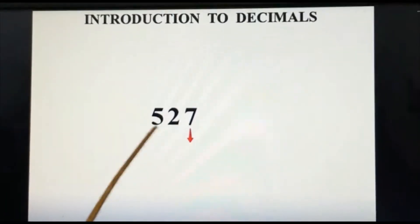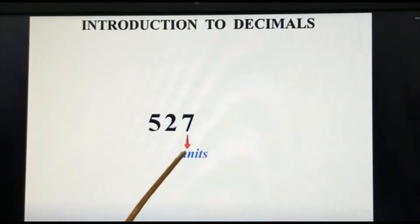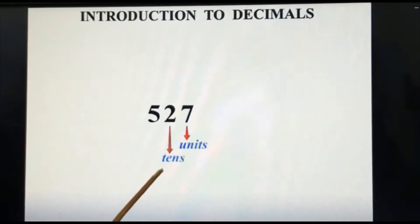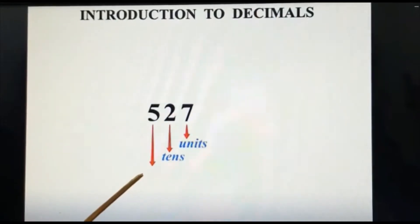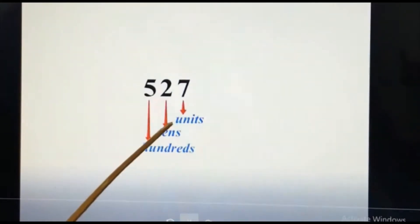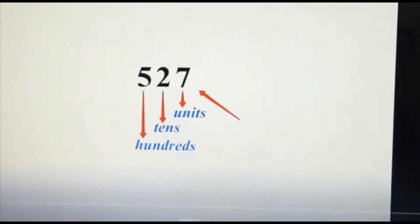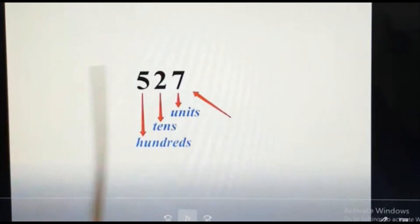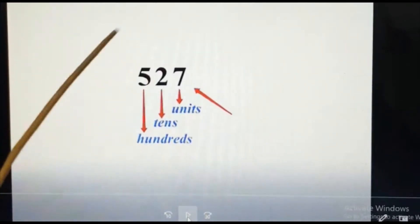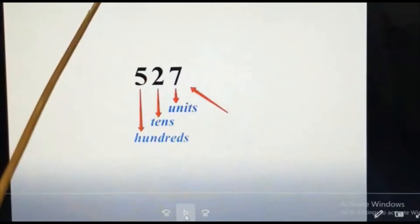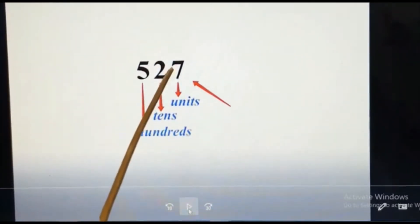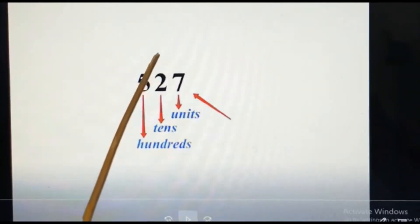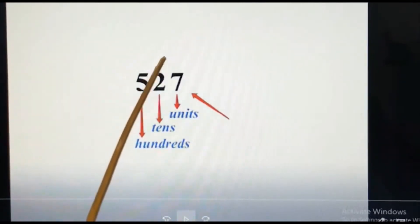Please look here. I am writing a number — what's the number? 527. You know this number and you know the place values: 7 comes in the units or ones place, 2 comes in the tens place, and 5 comes in the hundreds place. So 527 is a whole number — for example, you can say 527 chocolates, meaning there are 527 chocolates.